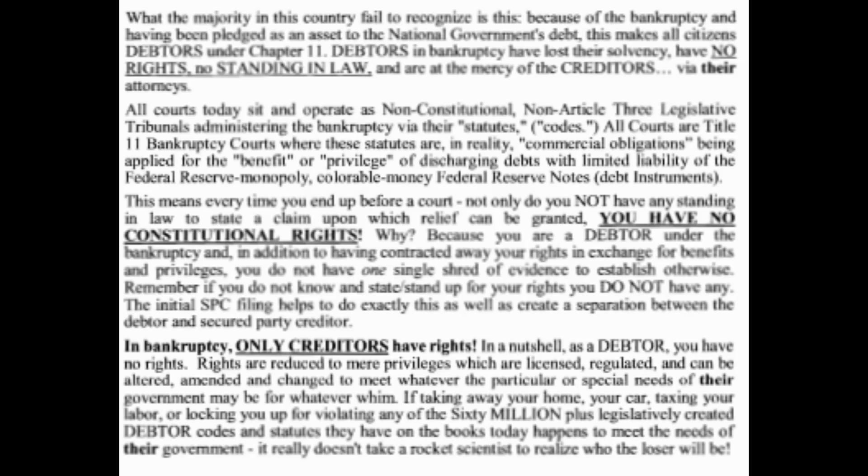Whether taking away your home, car, taxing your labor, locking you up, or violating any of the 60 million-plus legislatively created debtor codes and statutes they have on the books today — it doesn't take a rocket scientist to see who the loser will be. So that's how crucial it is to get your paperwork in there, get that done, state your primary lien holder position on the all-caps name, commercially capture it, and these people cannot just use it whenever they want. It is a game of chess — stop playing checkers with these people. That's what I've got for you for now. Until we meet again.